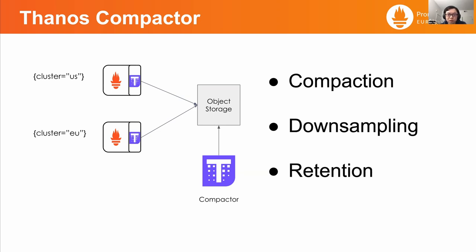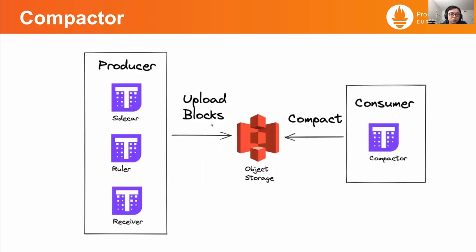So why does this happen? We can think about this and imagine it as a message queue scenario. The Thanos compactor is the message queue consumer, and the producers are Thanos sidecars, rulers, and receivers who upload blocks to the object storage. In this case, the object storage is the message queue.